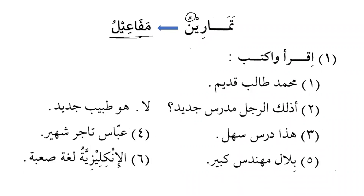Tamarinu is on the pattern of mafa'ilu. How is it on that pattern? The first letter has fatha, the second letter has fatha, the third is alif, the fourth takes kasra — here it has kasra — the next is sakin (ya is sakin), and the last takes dhamma or fatha. So tamarinu fits mafa'ilu. This is a very important pattern used a lot in the Quran. Any noun on the pattern of mafa'ilu will be a diptote, mamnu' mina al-sarf.